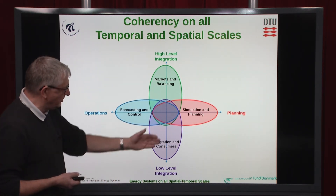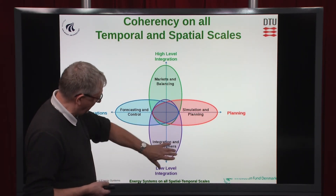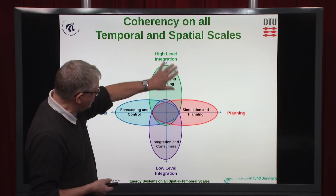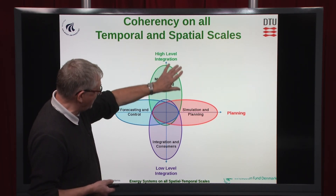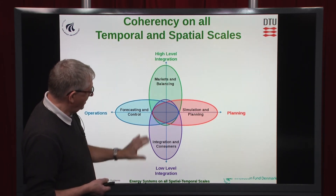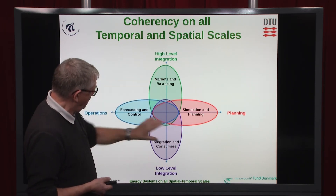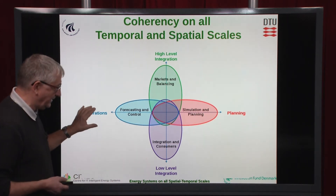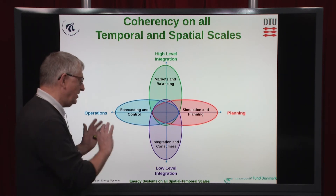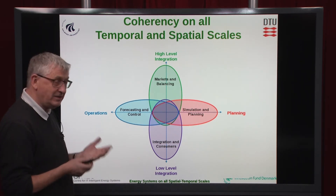We need also to ensure that the low-level part of the system — with the appliances, the buildings, the cities, and districts — are connected to the high-level markets and the balanced responsible parties which ensure the high-level integration. So we need to ensure that these spatial and temporal scales are connected, and this has been one of the key elements of the CITIS project to ensure a coherent interplay between all these temporal and spatial scales.